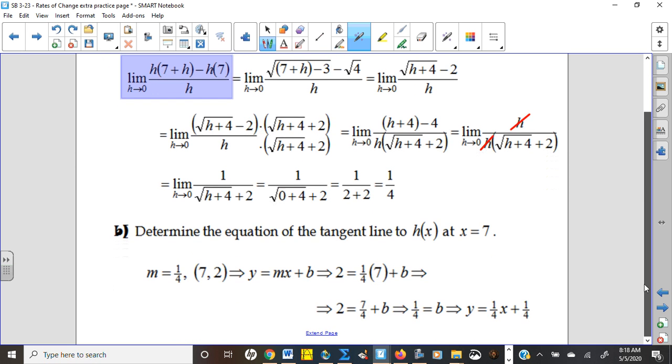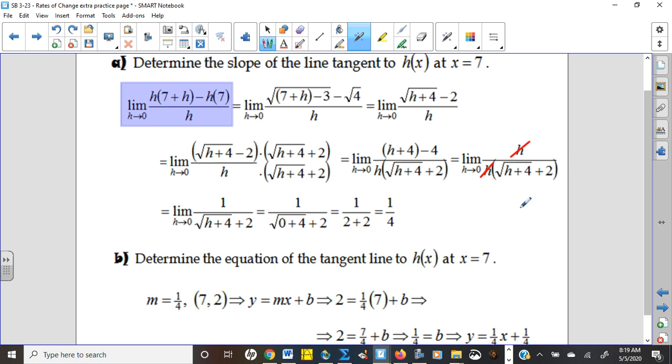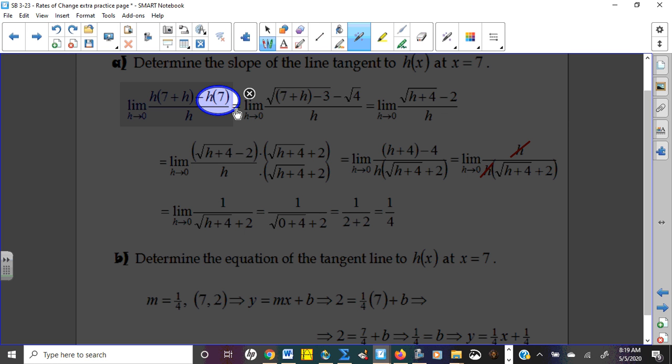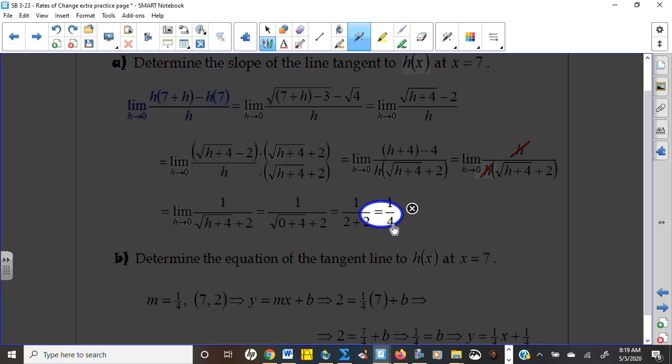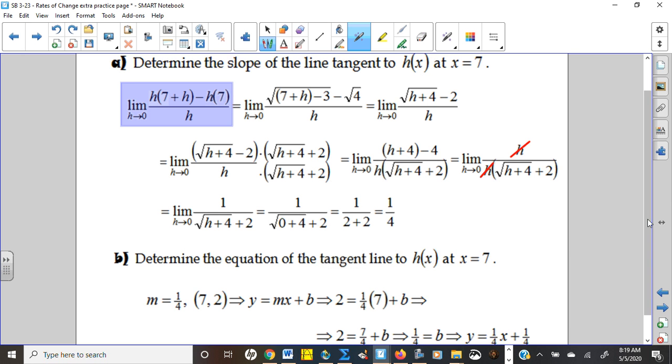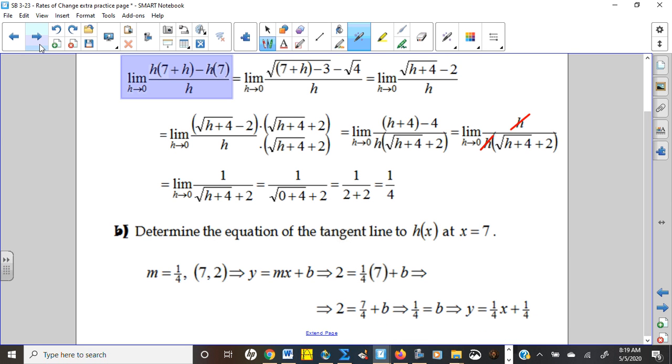Part B is just to find the tangent line at that point. Well, now that we have the point, remember, we know that X is 7, but we found up here, when we did H of 7, we found that the Y value there was 2. So we have our point, 7, 2, and now we have our slope that we found right here, 1 4th, and once you have a point and a slope, it's algebra 1. Plug them in, find the equation of your line.